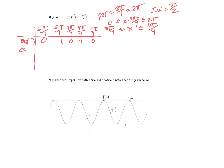Now doing the cosecant of these sine values: undefined, one, undefined, negative one, undefined. Following the order of operations, I multiply that ratio by negative one half. So: undefined, negative one half, undefined, one half, undefined.